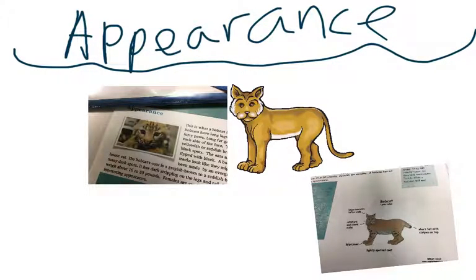And this is what a bobcat looks like. They have long legs and large furry paws. Long fur grows from each side of the face. The body is yellowish or reddish brown with black spots. The ears and tail are tipped with black.